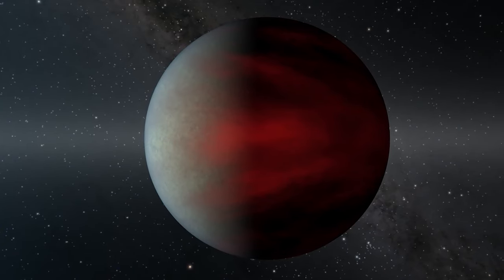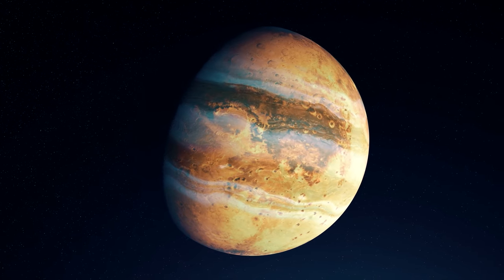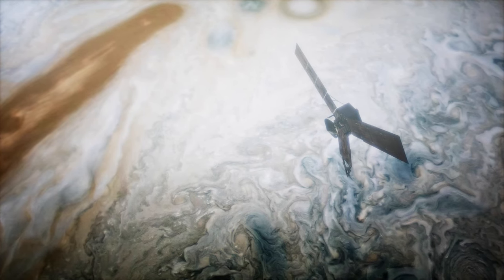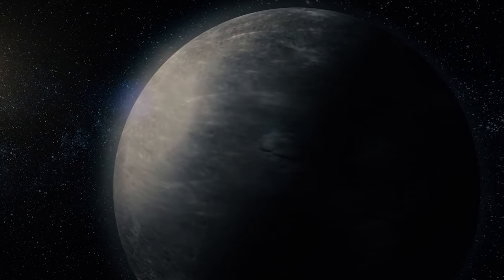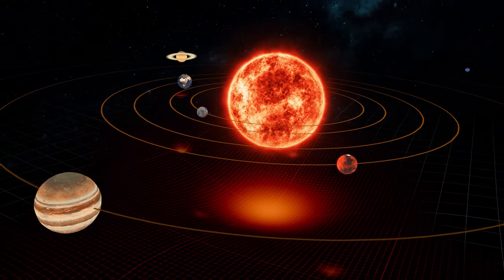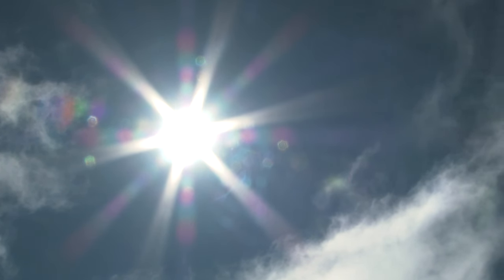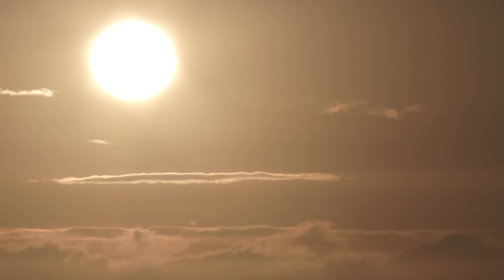Hot Jupiters are among the most intriguing and unexpected discoveries in the field of exoplanet research. These gas giants bear a resemblance to our own Jupiter in terms of mass and composition, but with one key difference: their blisteringly close proximity to their host stars. Imagine a planet several times the mass of Jupiter, but instead of taking 12 Earth years to complete an orbit around its star, it does so in just a few days. The close orbit of these gas giants means they're exposed to intense heat from their stars, leading them to have daytime temperatures that can soar up to 2,000 degrees Celsius. This is hotter than some stars.